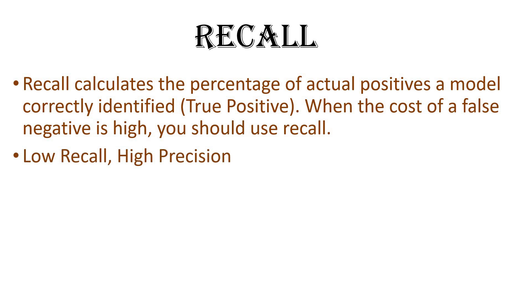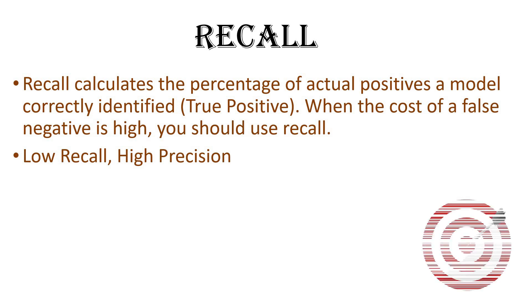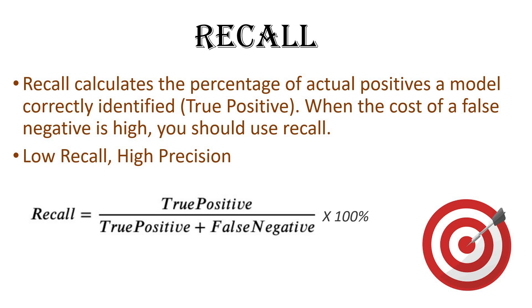If recall is low then precision should be high. The formula for recall is: True Positive divided by (True Positive plus False Negative). The difference between recall and precision formulas is that recall uses false negative while precision uses false positive. Precision is used where the cost of false positives is more; recall is used where the cost of false negatives is more.